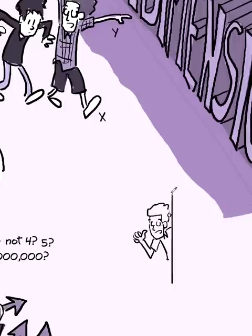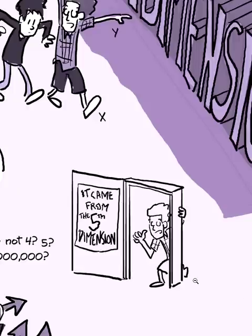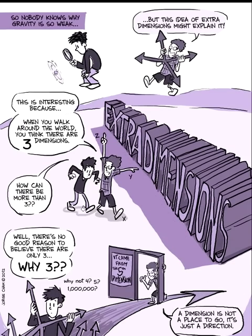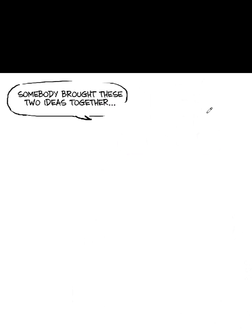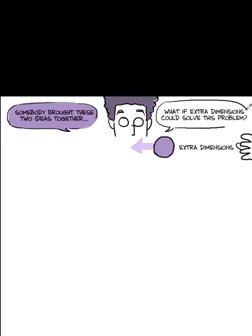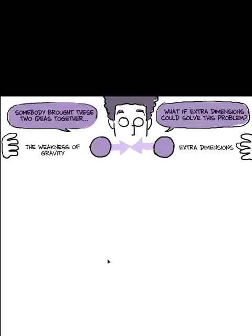Remember, dimension is not a place to go. In science fiction, a journey to another dimension is like an alternate universe. But really, dimension is just a direction in space. There's this common misuse of the word dimension. Somebody brought the two ideas together. There's been bouncing around this idea of extra dimensions. What if that could solve this problem, which is the question of why gravity is weak?